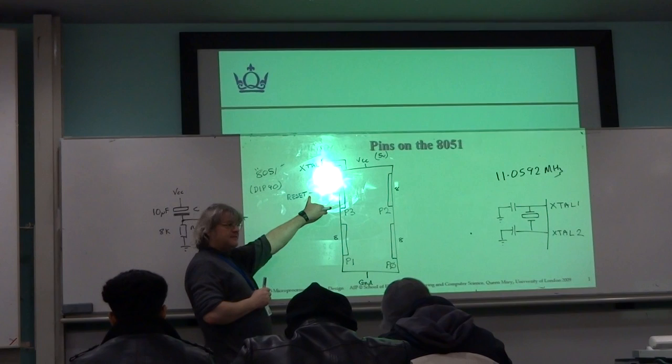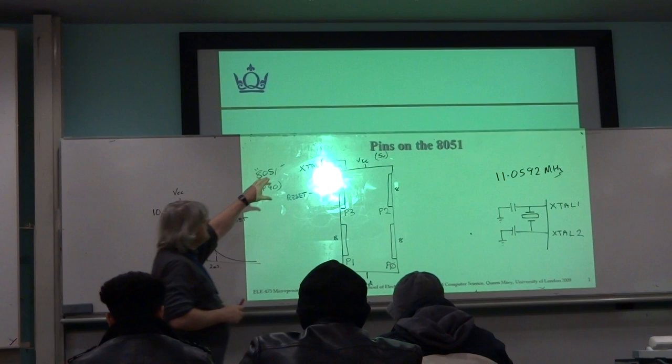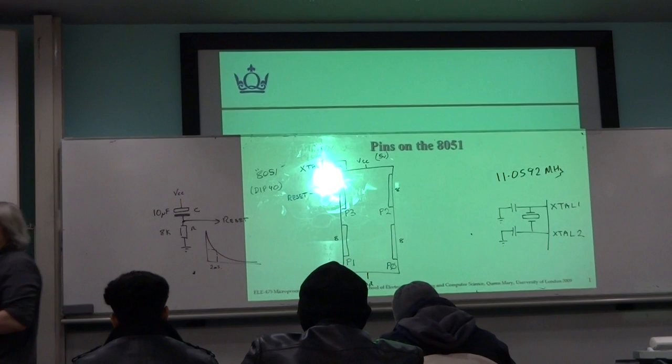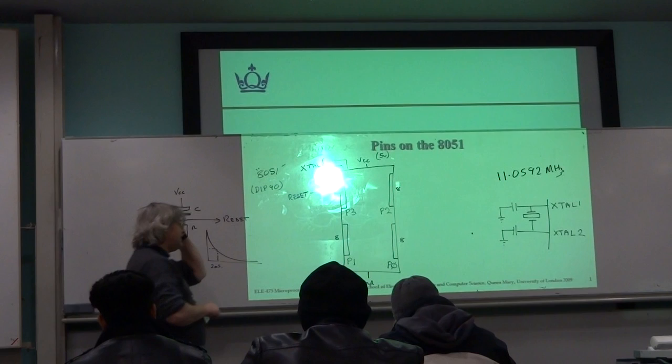So that's one more pin that we've talked about. So far we've got two pins for the crystal, two pins for the power and ground, one pin for the reset, that's 5, plus the other ports, 32. So 32 plus 5 is 37, got three more to go.